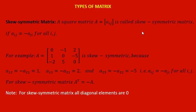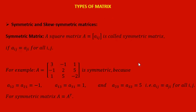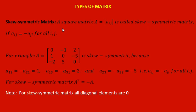In symmetric matrix you will find that A transpose equals A. Now skew symmetric matrix: here Aij equals minus Aji. In the example, A12 equals minus A21, A13 equals minus A31, and A23 equals minus A32. So Aij equals minus Aji — then the matrix is called a skew symmetric matrix. For skew symmetric matrix, A transpose equals minus A, and all diagonal elements are 0.